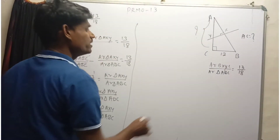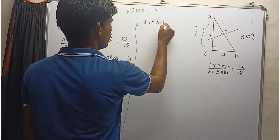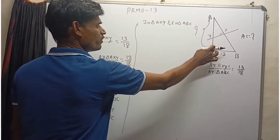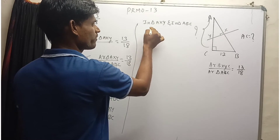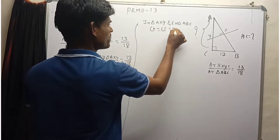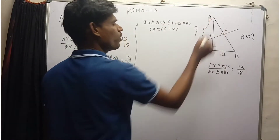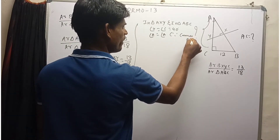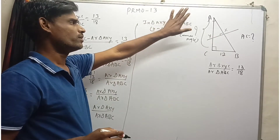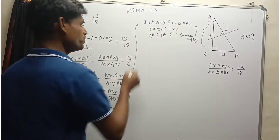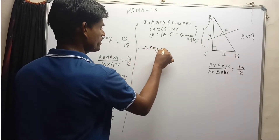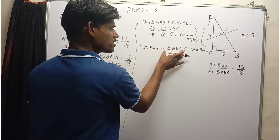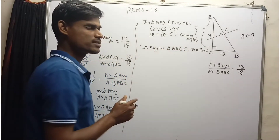Now let's compare these two triangles. In triangle AXY and triangle ABC, both triangles have an angle equal to 90 degrees, so we can write angle X equals 90 degrees. Also, these two triangles share a common angle A, so angle A equals angle A. With the help of the AA theorem, we can say that these two triangles are similar to each other. Therefore, triangle AXY is similar to triangle ABC under the AA theorem.